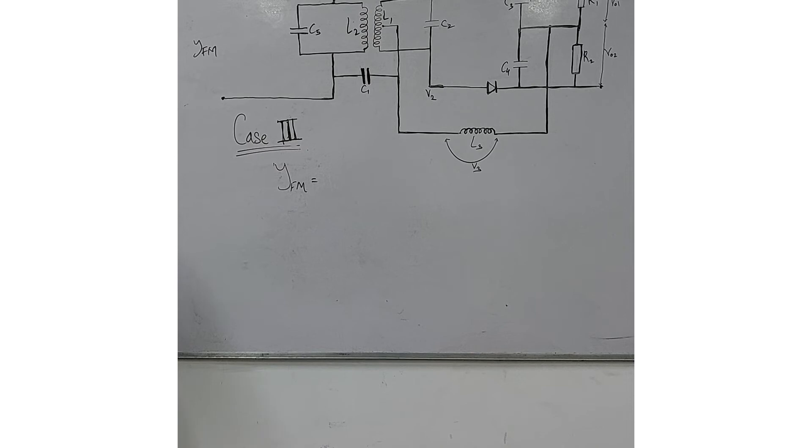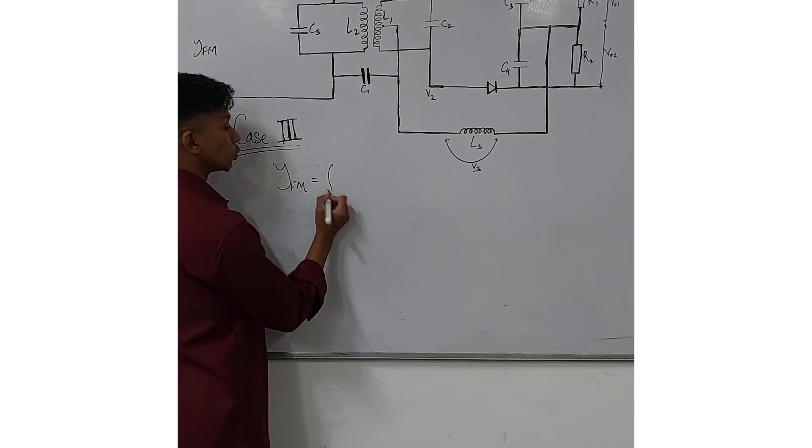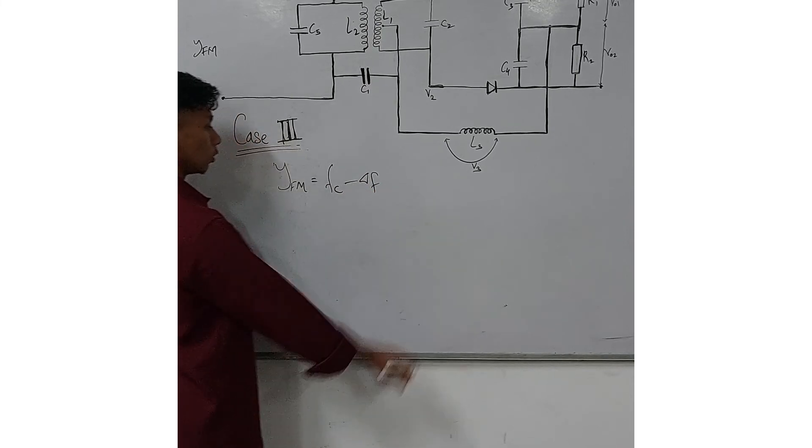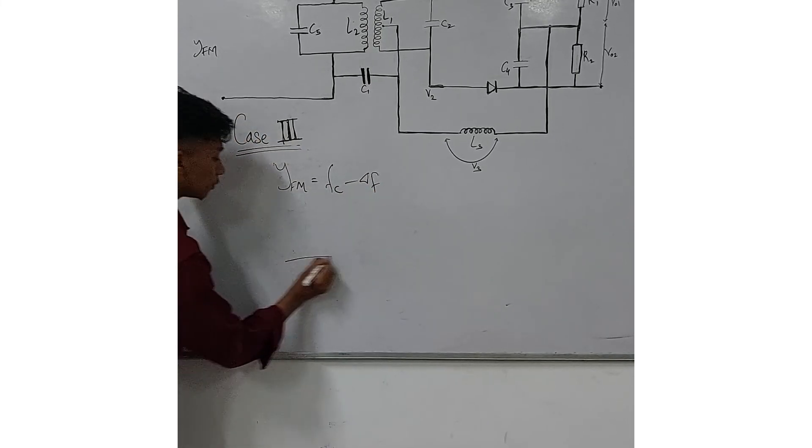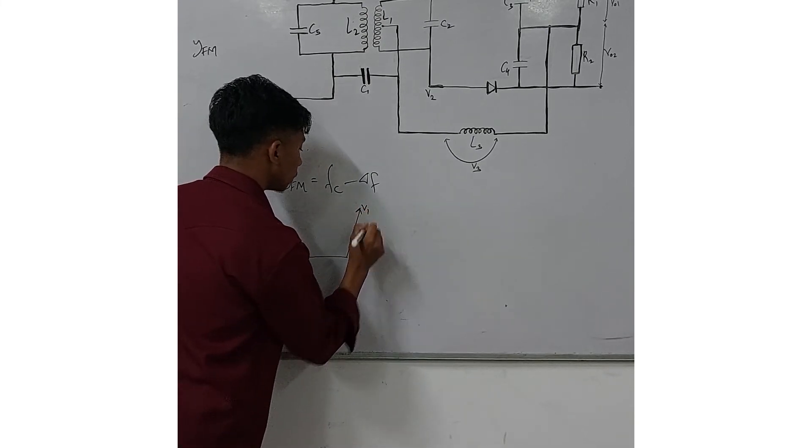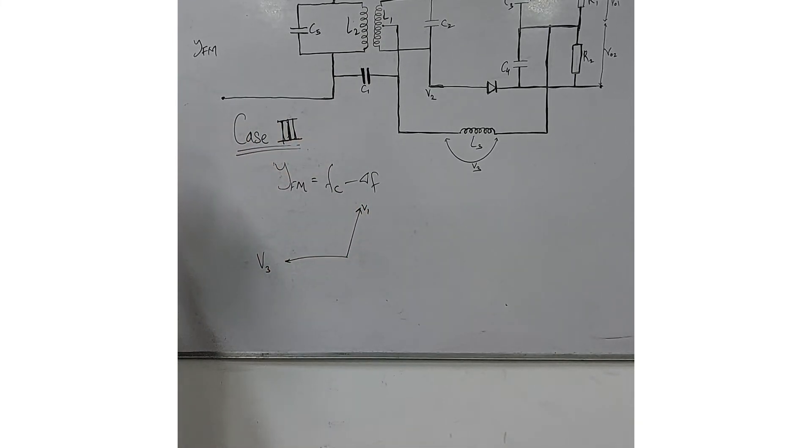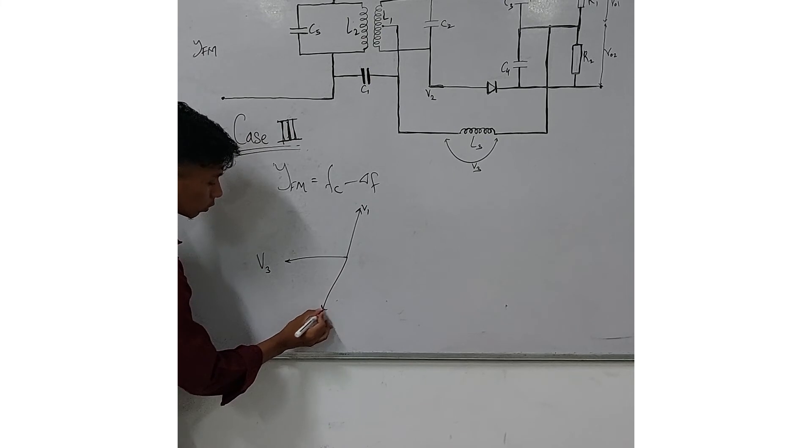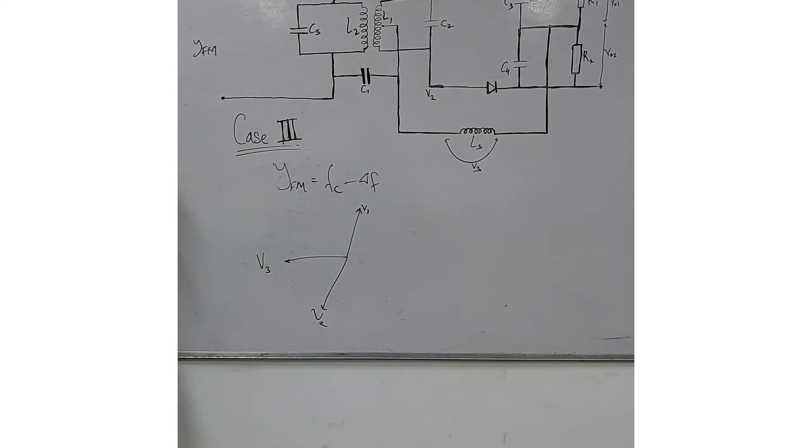Moving on to case 3, what if the input frequency is off resonance, that is fc equals fc minus delta f. We can see that the phase difference between V3 and V1 increases. However, the phase difference between V3 and V2 decreases.